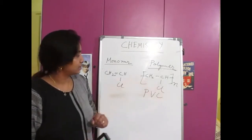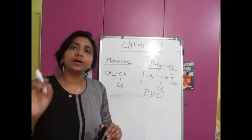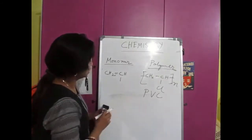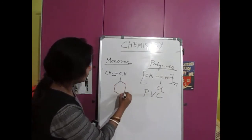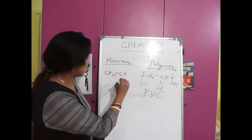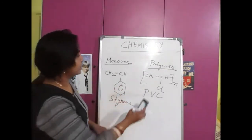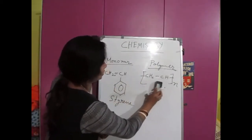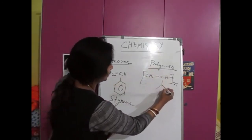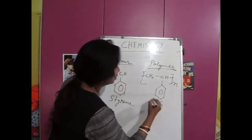Next, if I write polystyrene: first we have to write the structure of styrene. Replace chlorine and write a benzene ring instead of chlorine — that is the structure of styrene. Similarly, to make the repeating unit, remove the double bond and we get the repeating unit. Instead of chlorine, we write a benzene ring. That is the structure of polystyrene.